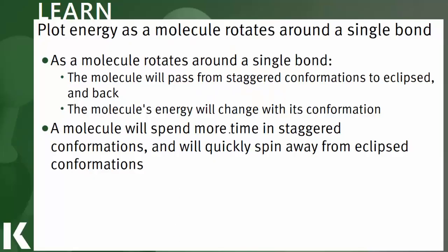We've seen that as a molecule rotates around a single bond, it passes from staggered conformation to eclipsed, and then back to staggered, and back to eclipsed. So the molecule is always having to pass through an eclipsed conformation in order to reach the next staggered conformation. And we've also seen that staggered conformations are generally preferable to eclipsed conformations, and the reason why is all about energy.